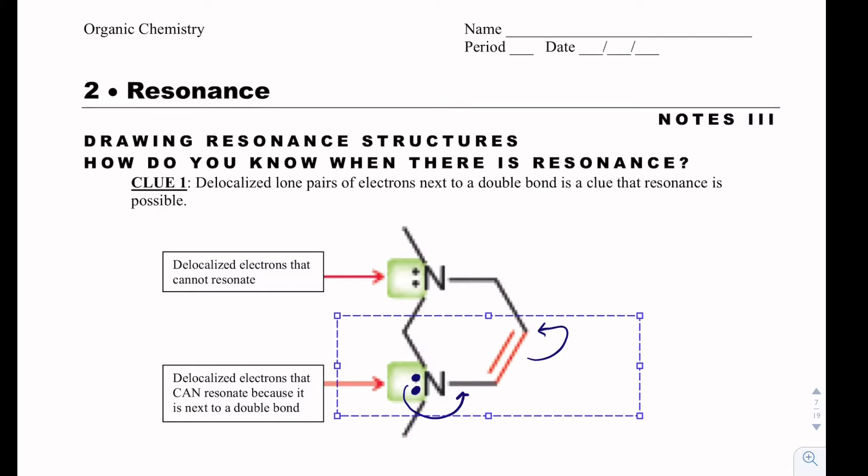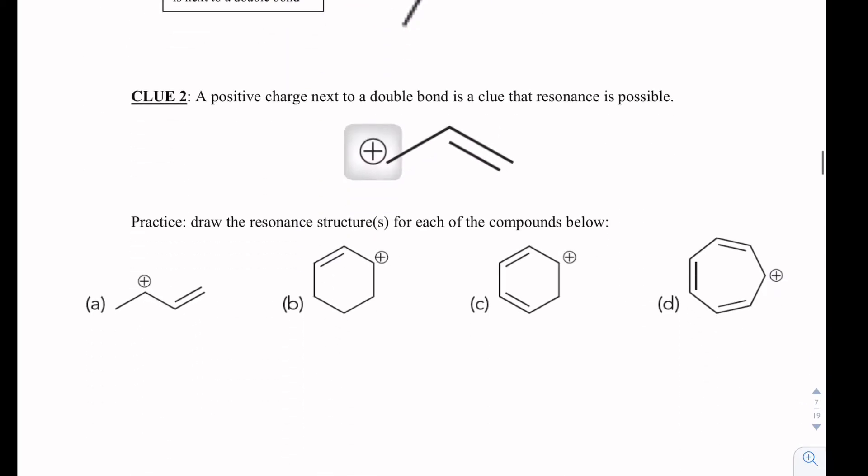If we have something like this with these lone pairs, which you could call them delocalized, that's fine. There's no double bond here to kick out, and so those truly don't have a place to move to. Another clue is that we have a positive charge next to a double bond. What can happen is we can move the electrons in a double bond. They are delocalized towards the positive charge. So we get resonance arrows that look like this.